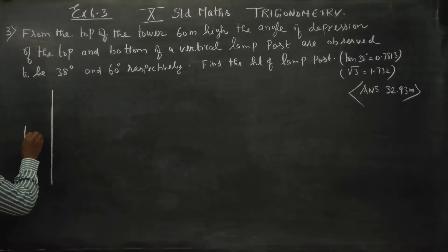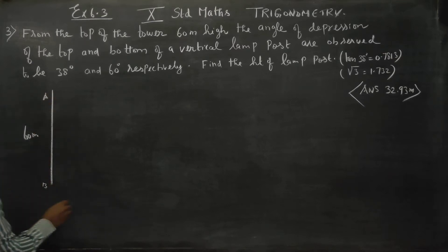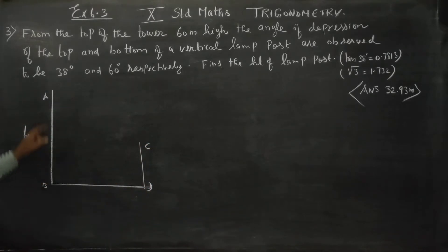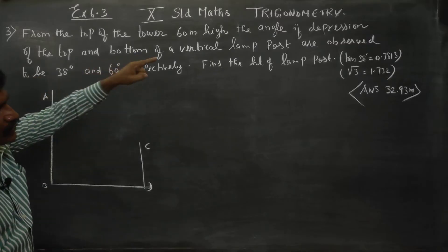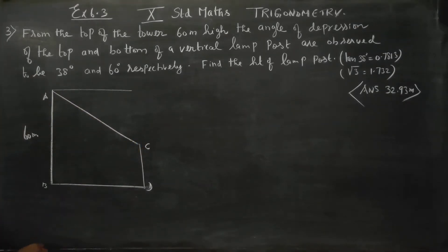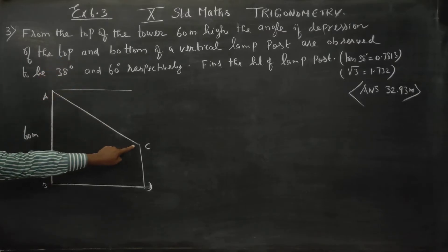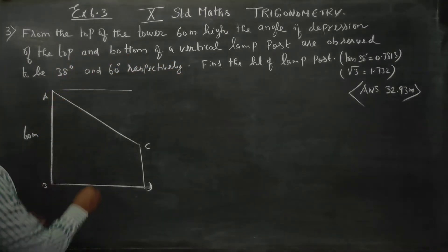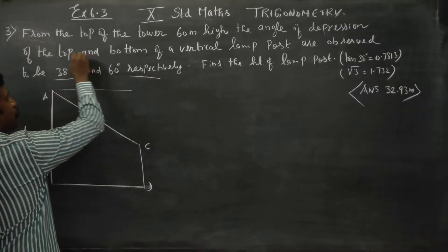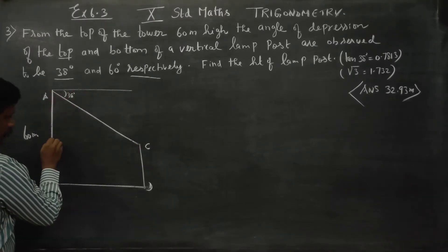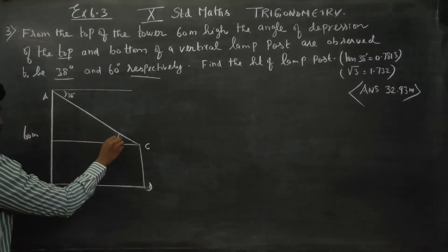Let AB be the tower with height 60 meters. Let CD be the lamp post. From the top of the tower, the angle of depression of the top of the lamp post is observed to be 38 degrees, marked here. This angle is 38 degrees.